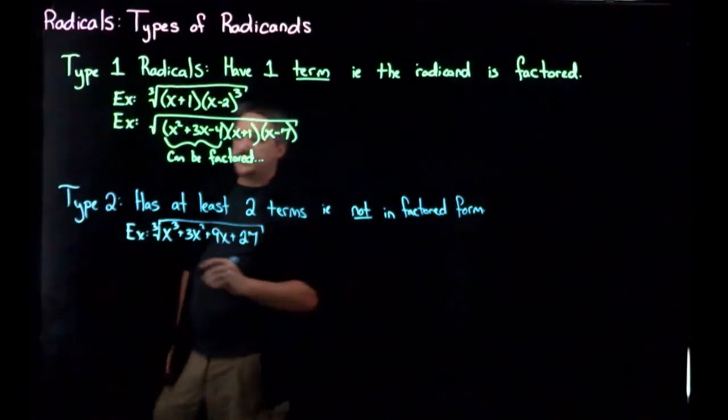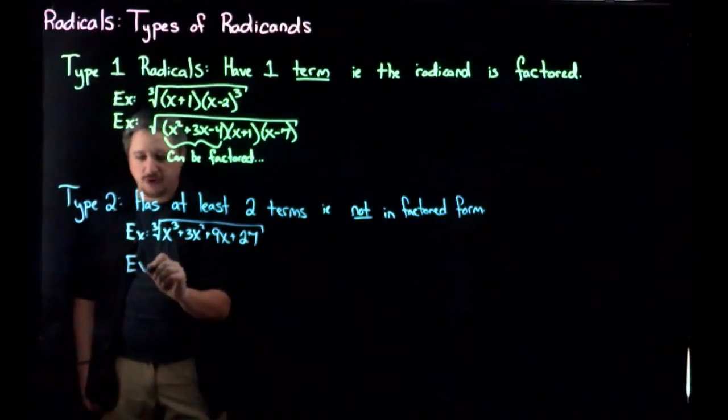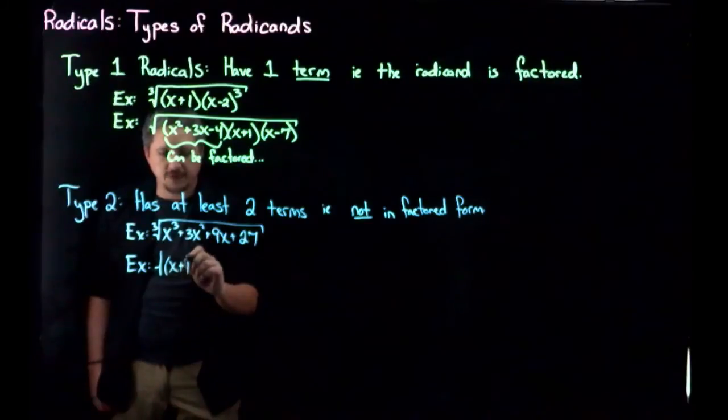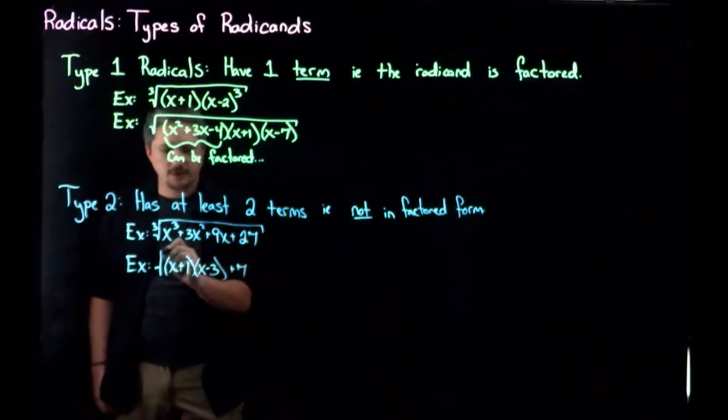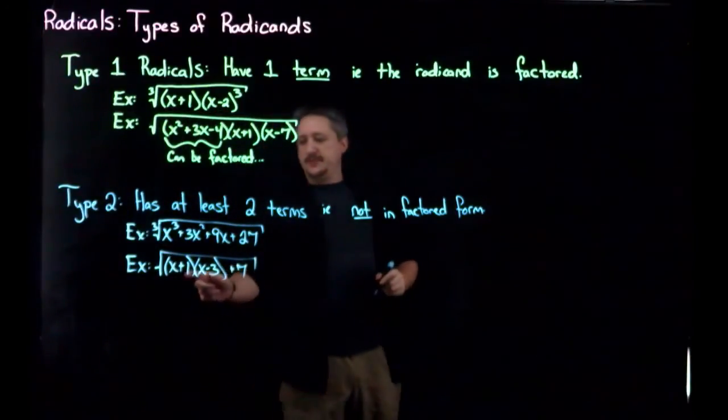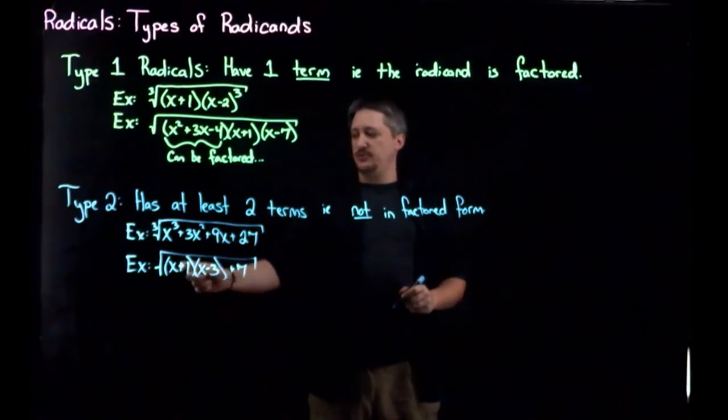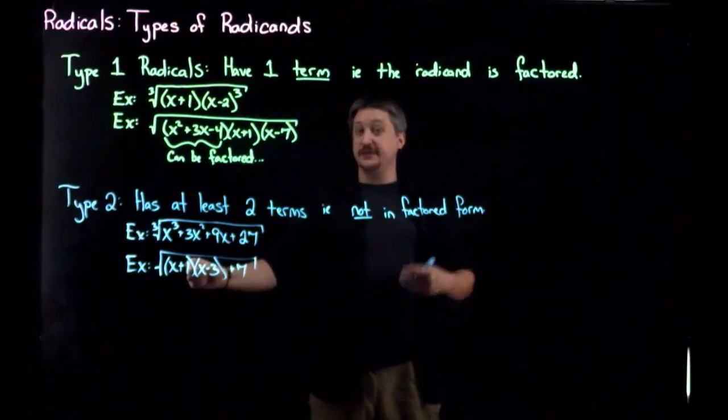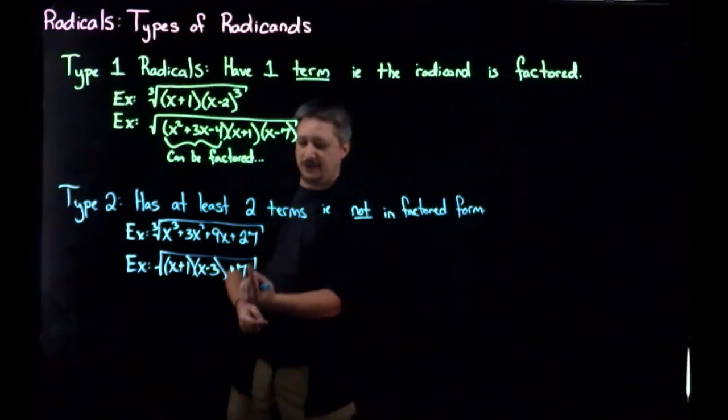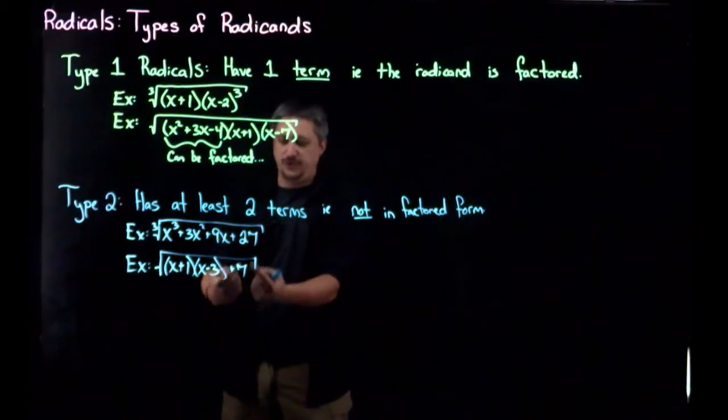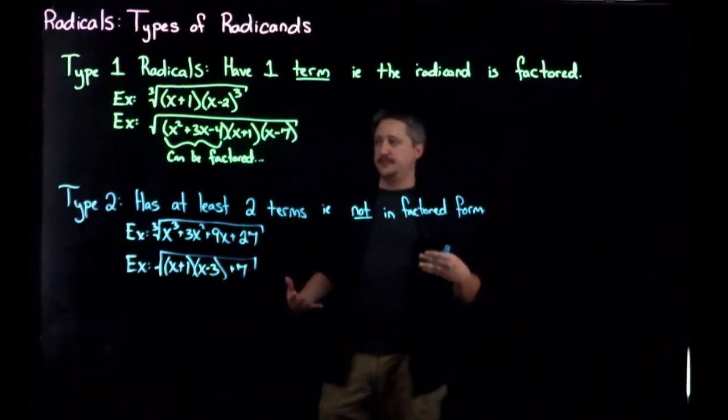Another example, you might have something that looks like x plus 1, x minus 3, plus 7. This looks like it's a factored form, because I do have a factorization here of a quadratic, right? The x plus 1 times x minus 3. But the last thing I do is not multiply. Because if I plug in an x, I'd do an x here, an x there, figure that out, multiply them together, and then the last thing I do is add 7, meaning that I have a term of this thing, this 7 is a term, and this whole product is a term. So I have one term, two terms. So this is, again, a type 2 radical.